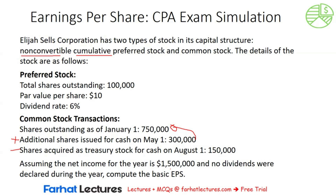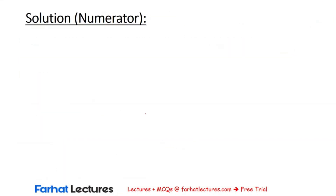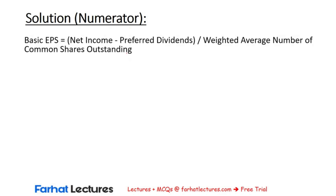Assuming the net income for the year is $1,500,000 and no dividends were declared during the year — this information is irrelevant here because we have cumulative preferred stock. Regardless of whether dividends were declared, we're going to take into account the dividends accumulated. If the preferred stock was non-cumulative, then this information would be relevant and the numerator would have been $1,500,000. However, because it is cumulative, we have to reduce this $1,500,000 by the dividends that are going to accumulate to the preferred shareholders. We're going to compute the basic EPS, starting with the numerator of the formula.